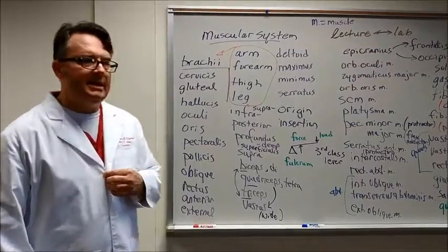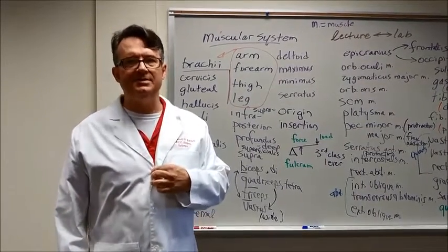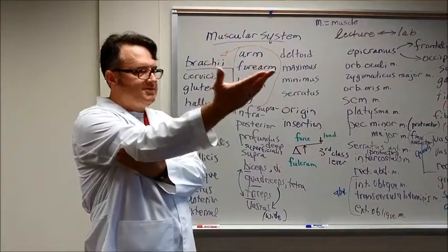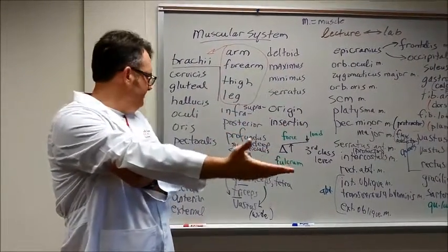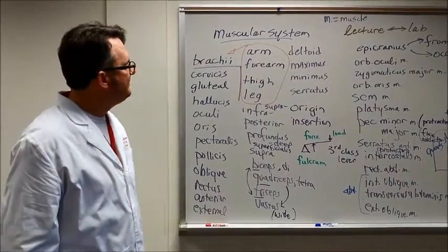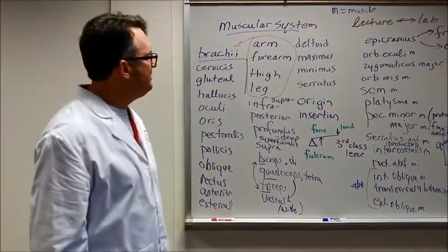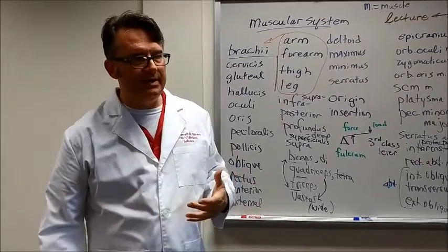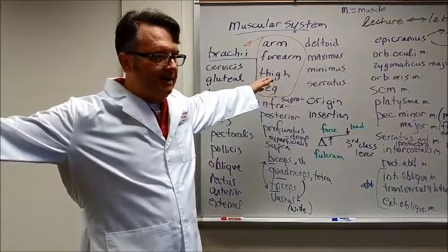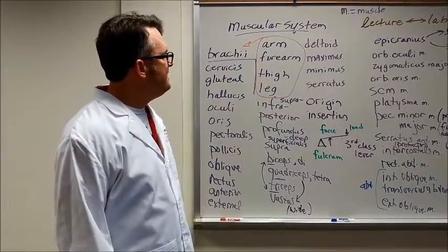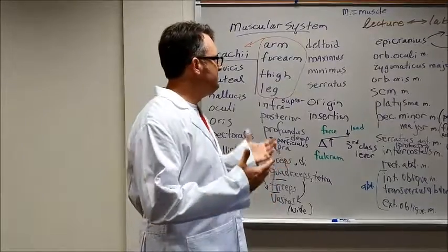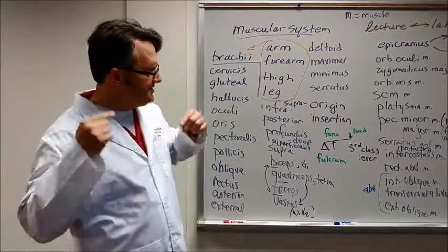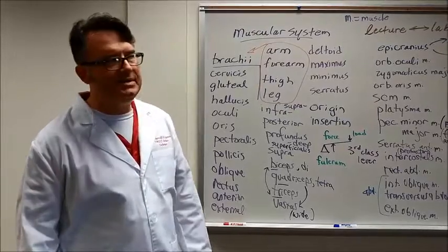Tetra is another word that we use to signify four. Triceps indicates that there are three muscle bellies on the muscle that extends your forearm at the elbow. Vastus means wide. Deltoid refers to the muscle on the point of the shoulder - it is in the shape of the Greek letter delta, which is like a triangle. It is an abductor of the arms. Maximus means large, minimus means smaller. Serratus means like the edge of a knife - a serrated knife has kind of a ridgy surface to it.